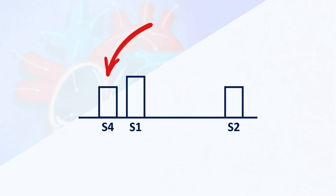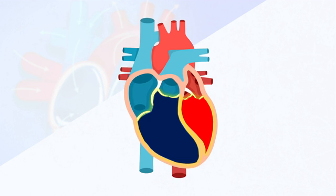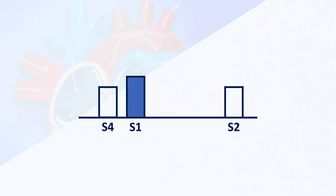Now let's look at S4, also known as the atrial gallop. It happens late in diastole, just before systole, meaning it's heard right before S1. This happens when the atria pump blood into the ventricles, right before the ventricles contract. In some cases, you can hear this when the ventricles are pretty stiff — the blood rushes in and bounces against the stiffer wall, causing the fourth sound. People sometimes use the word 'Tennessee' to describe its timing. S4 is usually a sign of some cardiac problems and would need to be evaluated further.